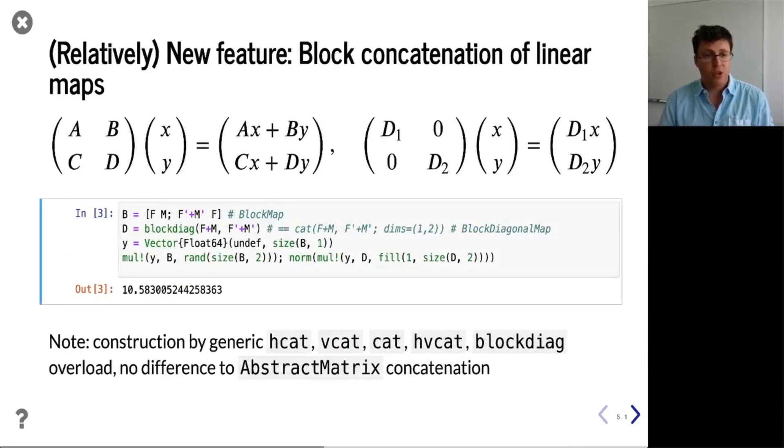Then, what else can you do with matrices? Well, you can concatenate them. Think of A, B, C, and D here on this slide as matrices or abstract linear maps, function-based ones. Then on the respective right-hand sides, you see how the action of the new linear map is defined, and in the code snippet you see how we do that in LinearMaps.jl.